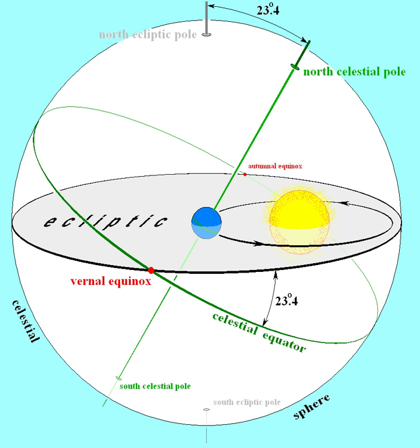The ecliptic is the mean plane of the apparent path in the sky that the Sun follows over the course of one year. It is the basis of the ecliptic coordinate system.